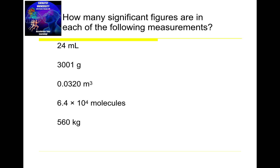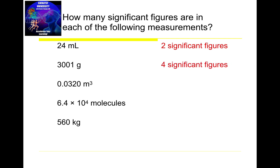Let's apply this and do some examples: how many significant digits are in each of the following measurements? For the first one, I draw a box around all non-zero digits — that's a box from the 3 to the 1, with two zeros caught in between. There's no decimal point, so that's all there is. That means there are four significant digits.